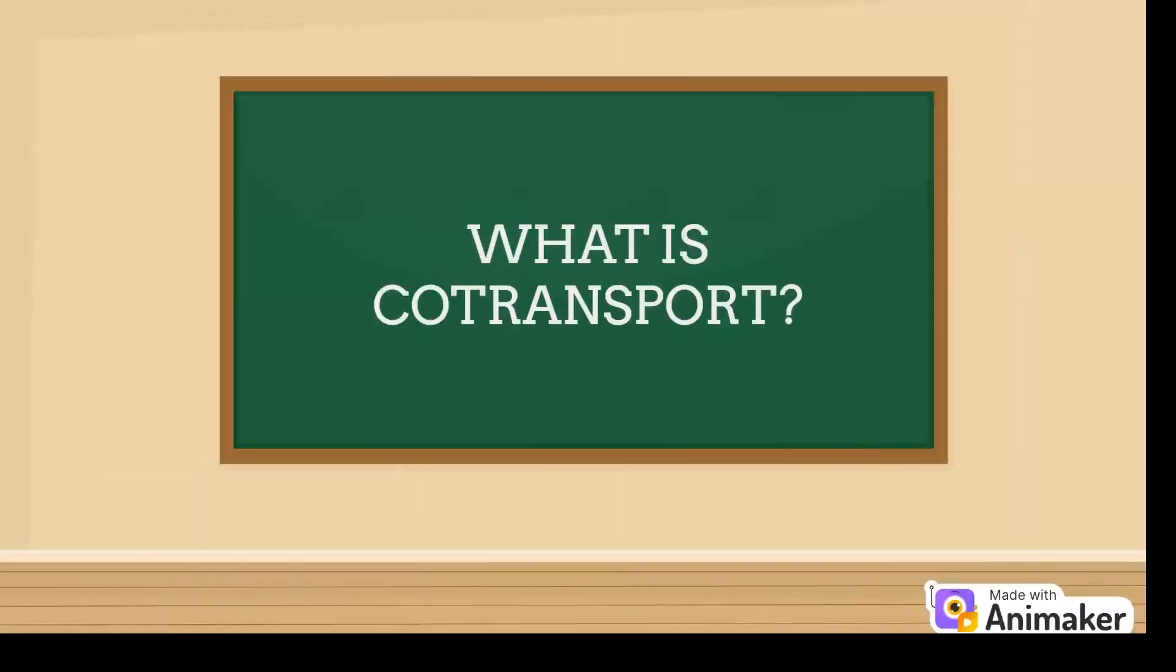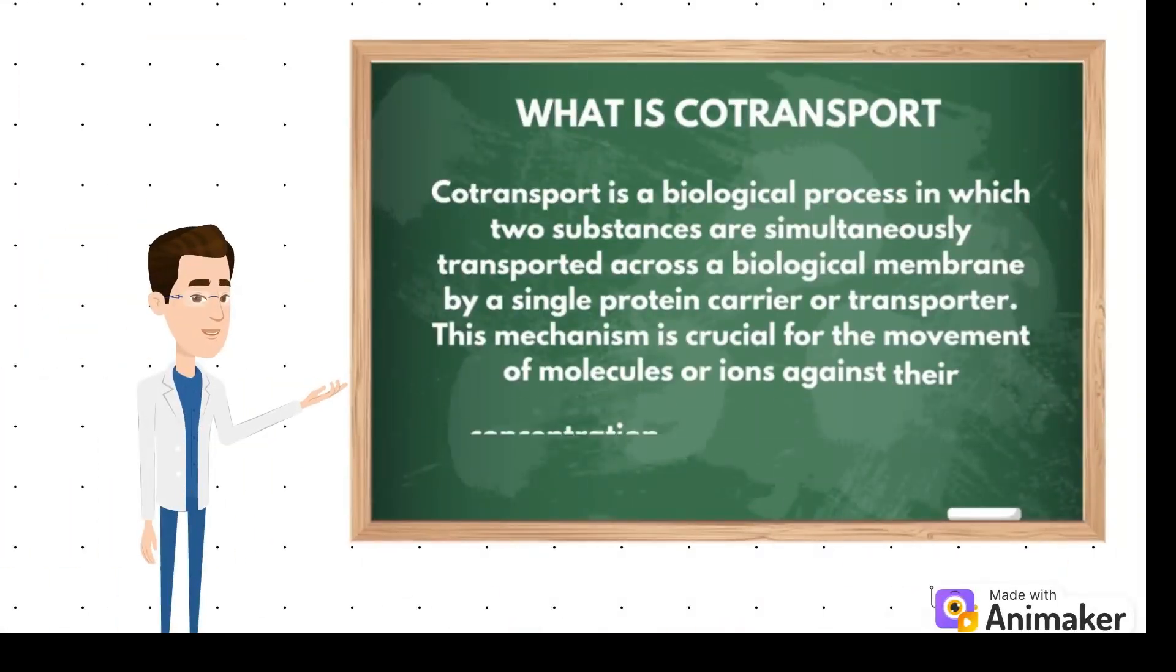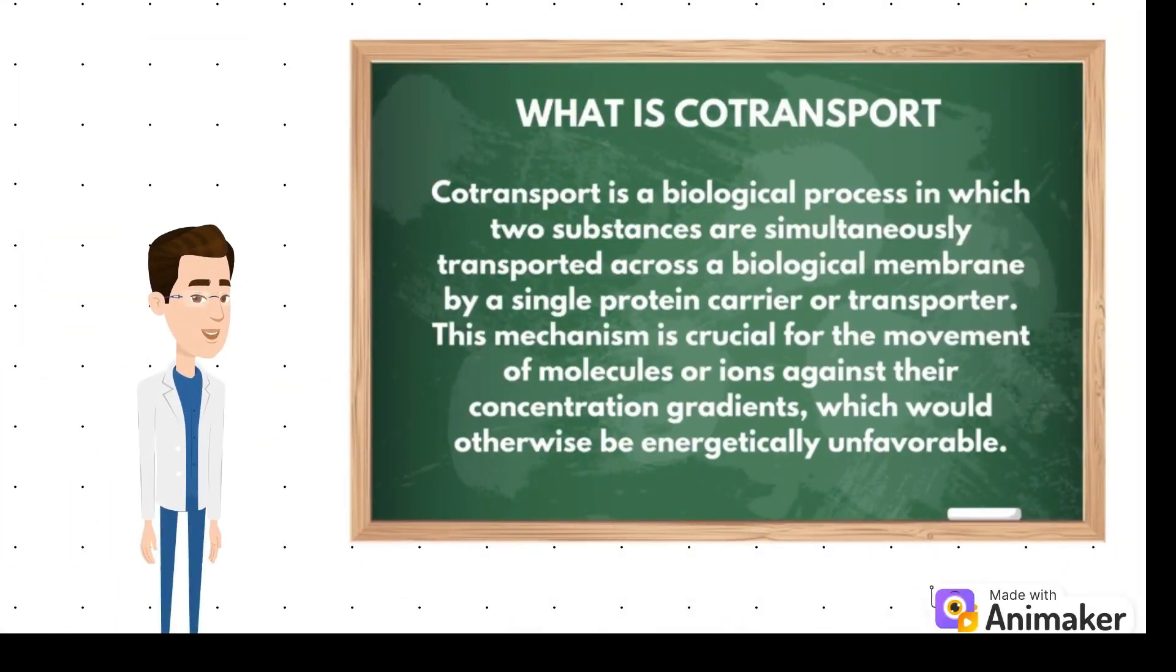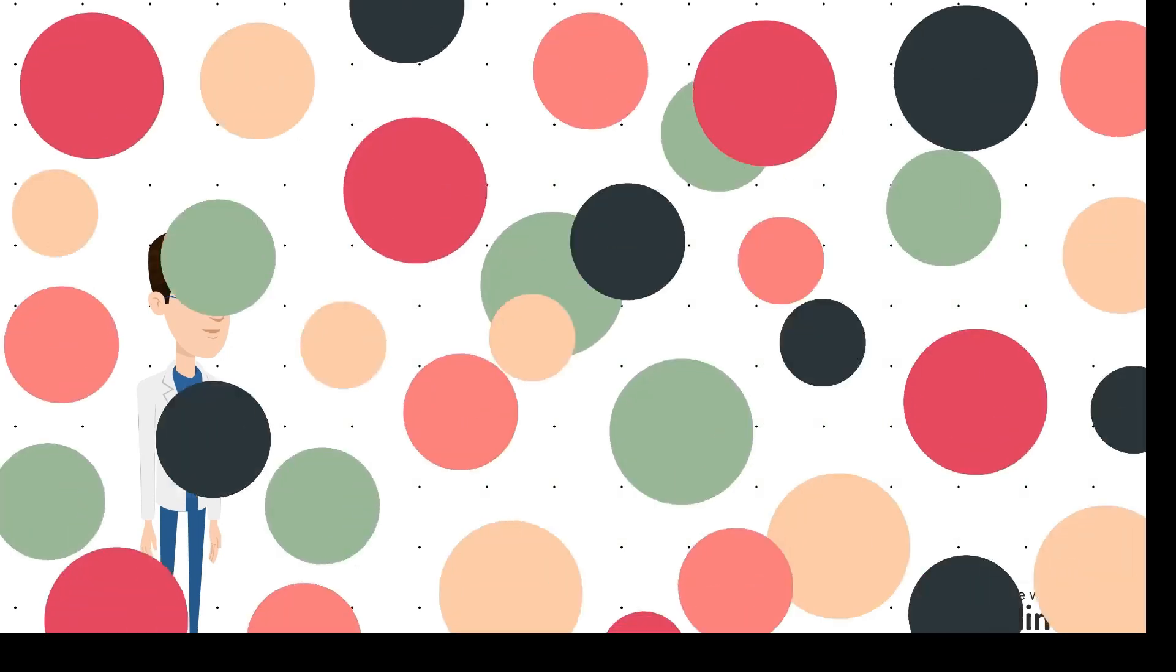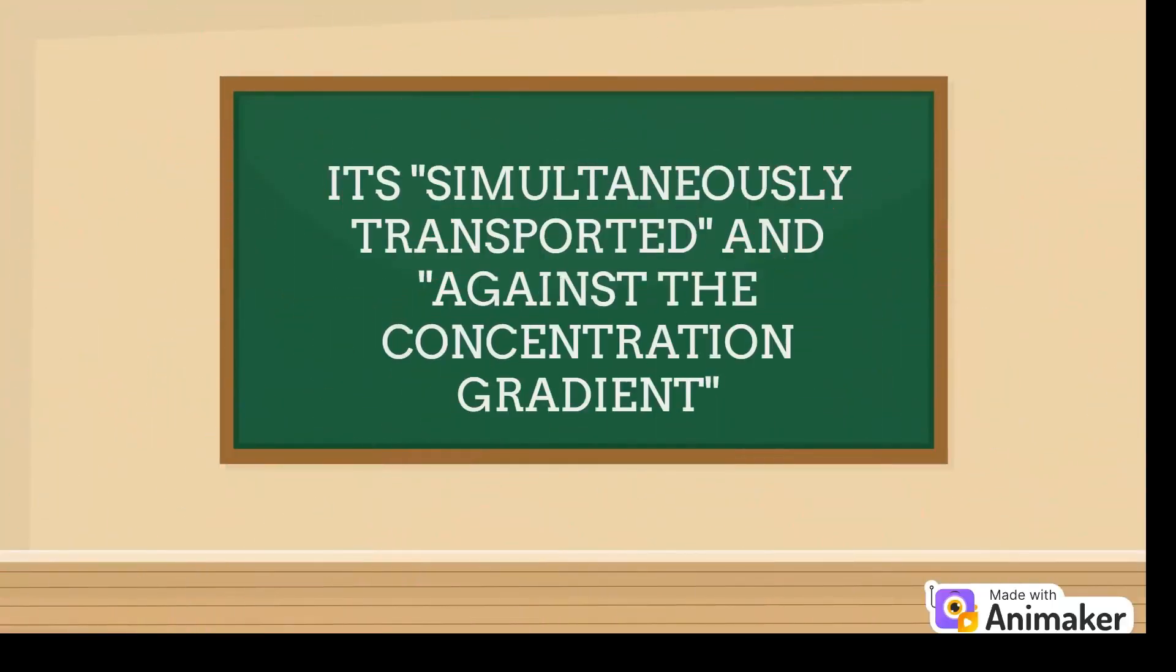What is co-transport? Co-transport is a biological process in which two substances are simultaneously transported across a biological membrane by a single protein carrier or transporter. This mechanism is crucial for the movement of molecules or ions against their concentration gradients, which would otherwise be energetically unfavorable.